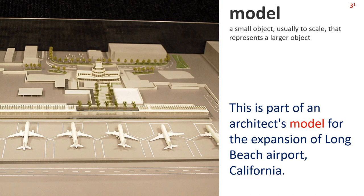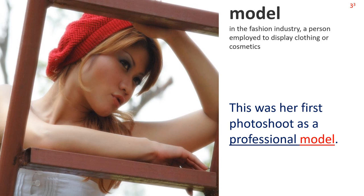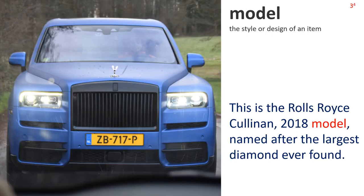Model — Definition 1: a small object, usually to scale, that represents a larger object. This is part of an architect's model for the expansion of Long Beach Airport, California. Definition 2: someone or something used as an example to imitate. Michelle Obama became a powerful role model for girls in America. Definition 3: in the fashion industry, a person employed to display clothing or cosmetics. This was her first photo shoot as a professional model. Definition 4: the style or design of an item. This is the Rolls Royce Cullinan 2018 model, named after the largest diamond ever found.